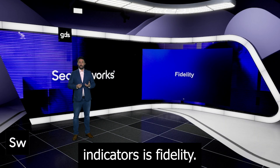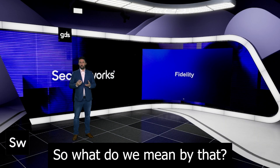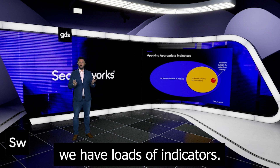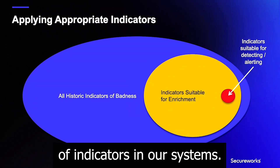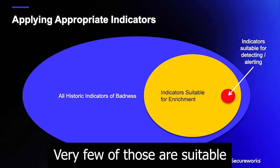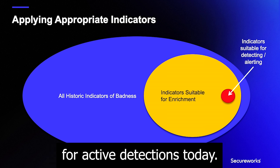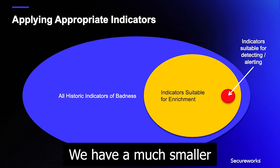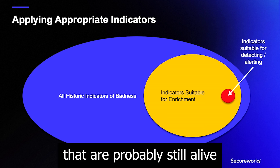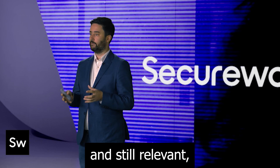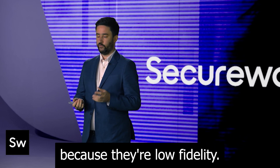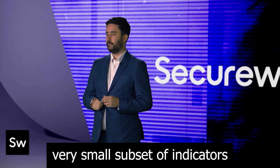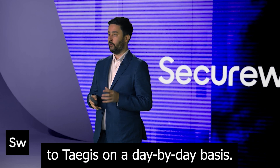The second dimension of indicators is fidelity. If we look at this Venn diagram, we have loads of indicators — we have millions of indicators in our systems. Very few of those are suitable for active detections today. We have the set of all possible indicators, a much smaller set that are probably still live and still relevant, but not appropriate for detections because they're low fidelity, and then a very small subset of indicators that we might apply to detections on a day-by-day basis.